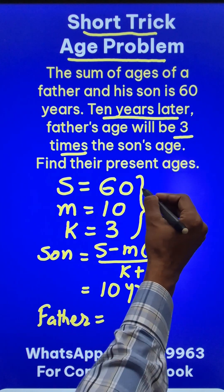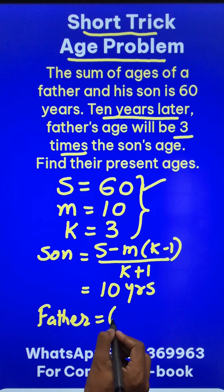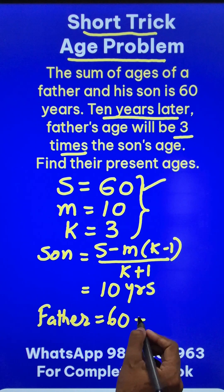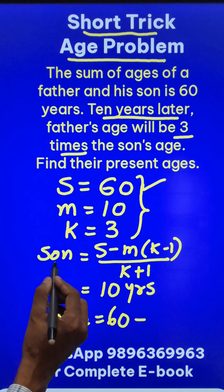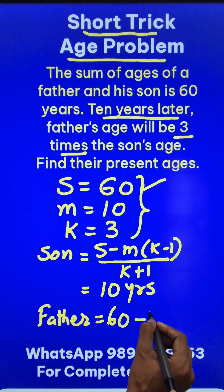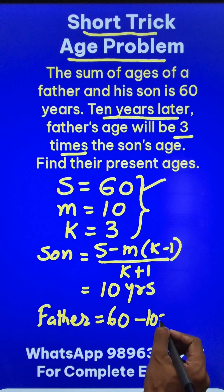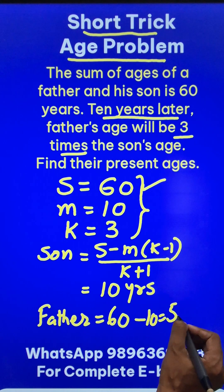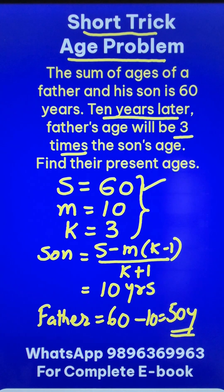So the father's age: take the sum, which is 60, and since the son is 10 years old, the father is 50 years old. Isn't that an amazing short trick?